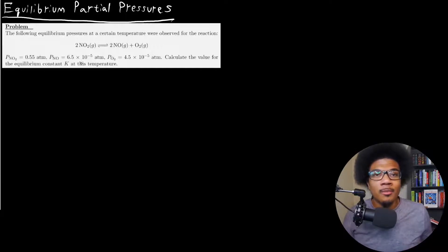So just from reading the problem, you might be like, wait, hold up, we were given an equation that used concentrations in order to calculate the equilibrium constant. How are we gonna use these partial pressures in order to do the same thing?